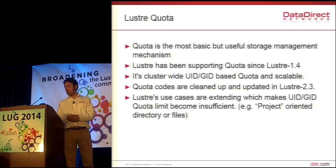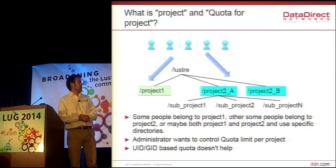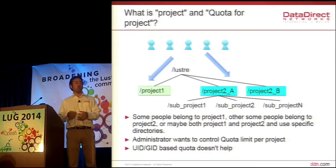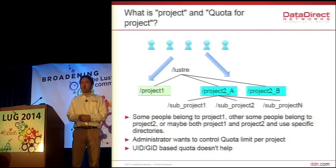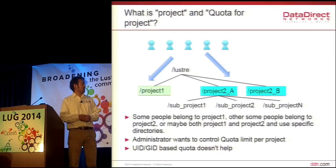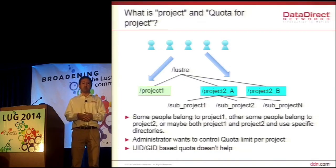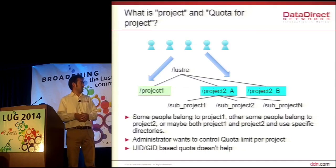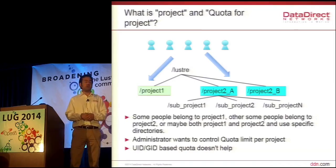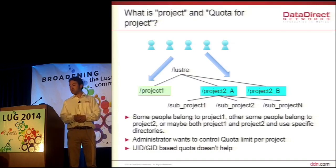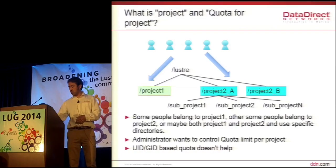On the other hand, Lustre's use cases are expanding beyond HPC into other areas. In some of those use cases, the user and group quota doesn't work. For example, in project-oriented file or directory usage, if you have a number of people belonging to specific projects, an administrator creates a specific project directory. But the administrator really wants to set a quota per project, not per user and group.